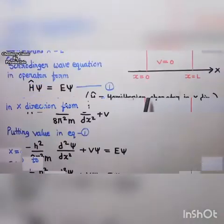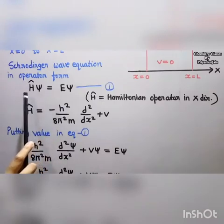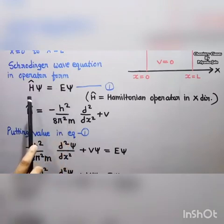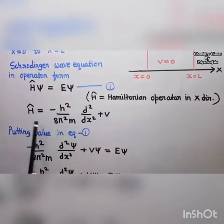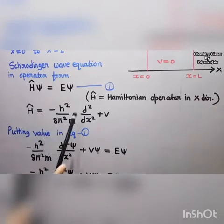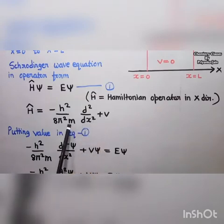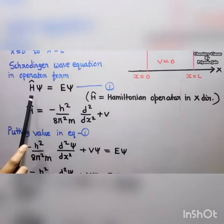While at the boundary and outside the box, the potential energy V equals infinity. The Schrödinger wave equation in operator form is H-hat psi equal to E psi, where H-hat is the Hamiltonian operator in the x direction. The Hamiltonian operator is H equal to minus h squared divided by 8 pi squared m, times d squared over dx squared, plus V. Here V is the potential energy, m is the mass of the particle, and h is Planck's constant.